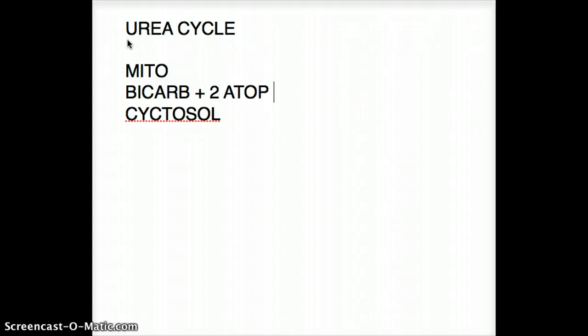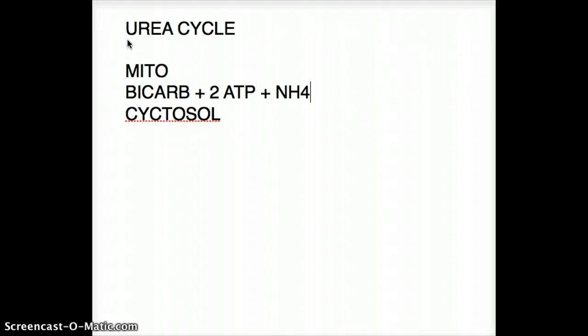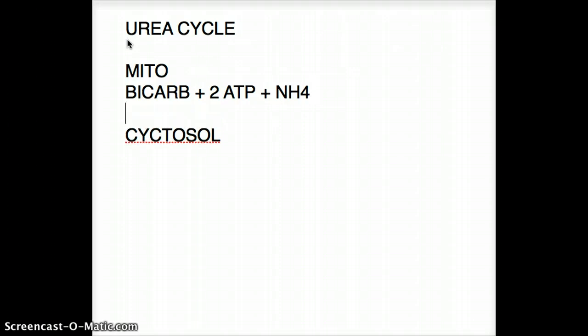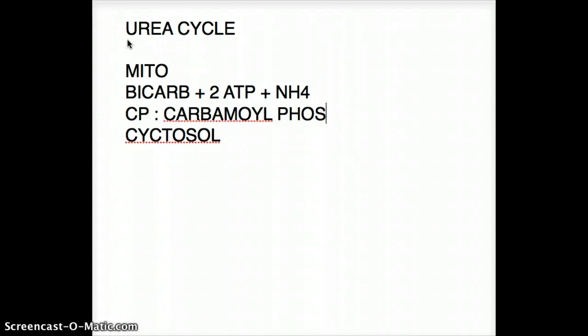It starts with bicarbonate, 2 ATP, and ammonia. These combine to form a substance called carbamyl phosphate, also abbreviated as CP.